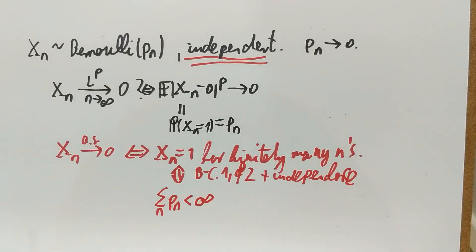If the sum of the Pn is summable, then only finitely many of these events occur. If the sum of the Pn is infinite, then these events occur infinitely often and therefore we have non-convergence.